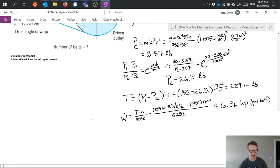So we simply take the 25 horsepower divide it by the 6.36 which is horsepower per belt and we get 3.93 which of course we can't have a fractional part of a belt.